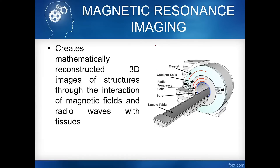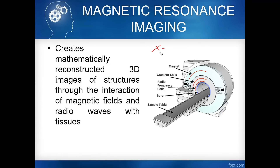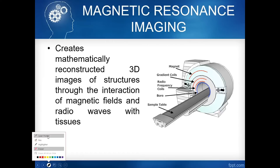Example: we have X gradient coil — ginagamit siya to produce a sagittal slice. Kapag naman gumamit tayo ng Y gradient coil, ang kaya nating maiproduce na slice ay coronal. And then the Z gradient coil, ginagamit siya to produce a transverse slice. And then any combination ng X, Y, and Z can produce oblique slices.